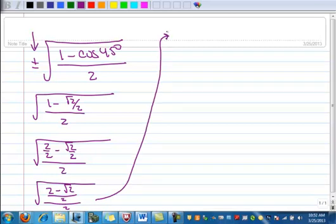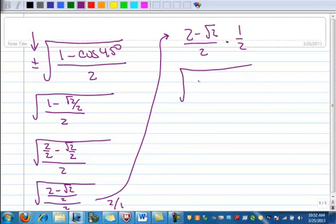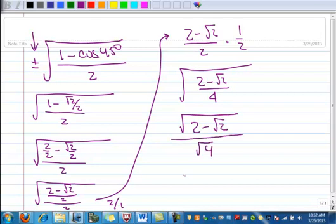So let's just take the fraction part of it for a second. So there's the numerator, and I'm going to multiply by the reciprocal of the denominator. Well, if the denominator is 2 over 1, its reciprocal is 1 over 2. Now let's put that back under the radical. So now I've got 2 minus the square root of 2 all over 4. And then I can break that apart. I've got the square root of the numerator all over the square root of 4. And the square root of 4 is 2. So I have the square root of 2 minus the square root of 2 all over 2.